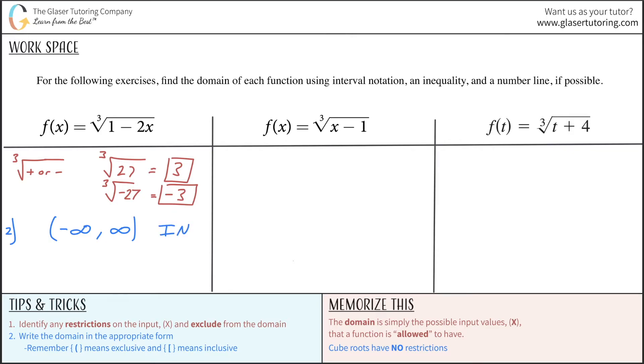In terms of the inequality, once you have the interval notation here, it's simple. Just plug in your x in the middle, meaning that it can go from negative infinity, and that will be less than x, and then x will be less than infinity. This is your inequality now for the domain.